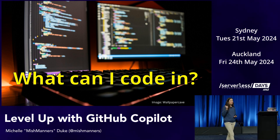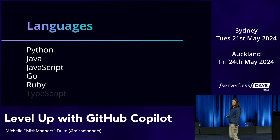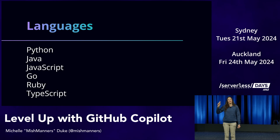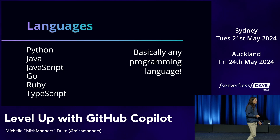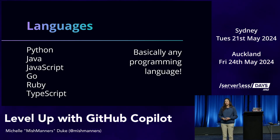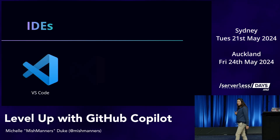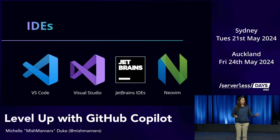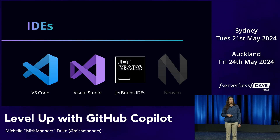GitHub Copilot supports lots of different coding languages: Python, Java, JavaScript, Go, Ruby, TypeScript — these are the ones it's really good at, because they're the most popular languages on the internet, giving Copilot the most data points in its training set. But if the language exists on the internet, GitHub Copilot will know it — it just might not be as proficient in more obscure languages due to fewer data points. For IDEs: VS Code, Visual Studio, JetBrains IDEs, and NeoVim. GitHub Copilot Chat is available for VS Code and Visual Studio, and has just become available for JetBrains as well.